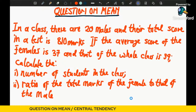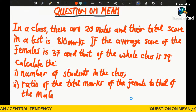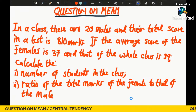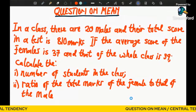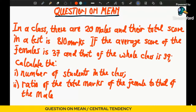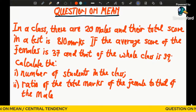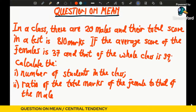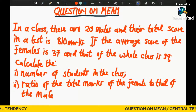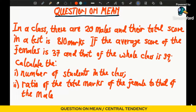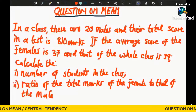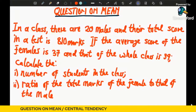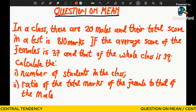Hello and welcome back to this section. As you can see on your screen, we are going to solve a question. In a class there are 20 males and their total score in a test is 810 marks. If the average score of females is 37 and that of the whole class is 39, calculate: (i) the number of students in the class, and (ii) the ratio of the total marks of the females to that of the males.